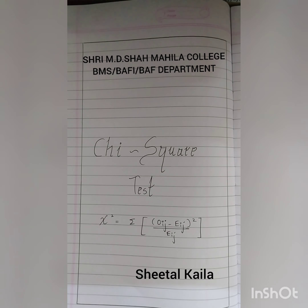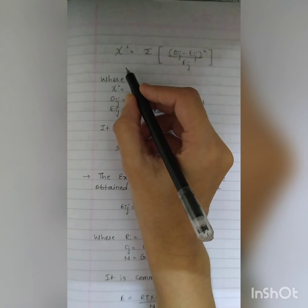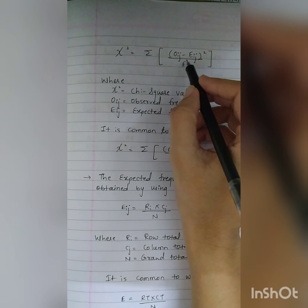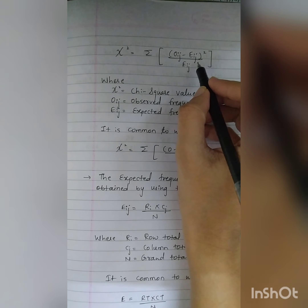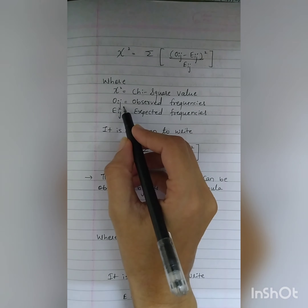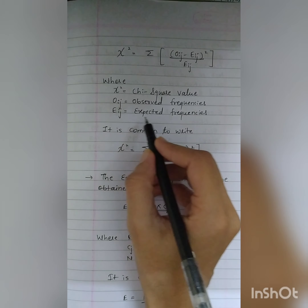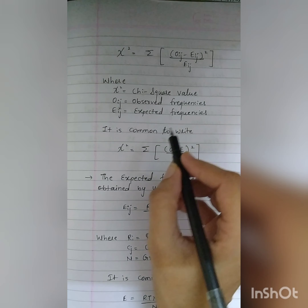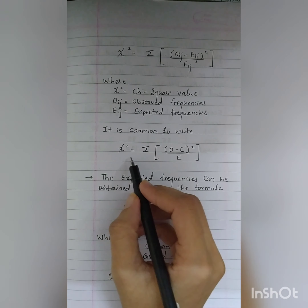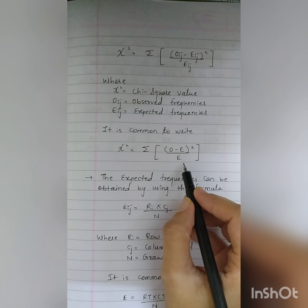How do you do a chi-square test? Calculate the chi-square statistic using the formula: chi-square equals summation of (Oij minus Eij) squared divided by Eij, where Oij is the observed frequency and Eij is the expected frequency. It is common to write this as chi-square equals summation of (O minus E) squared divided by E.